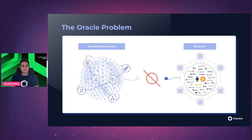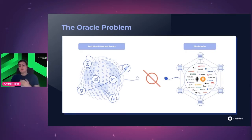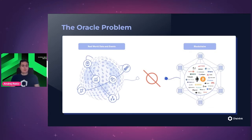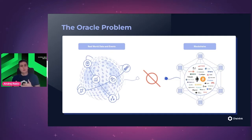That is the smart contract connectivity problem, and it was solved by oracles. By definition, an oracle is any entity — software, hardware, or a combination — that can provide off-chain data or off-chain computation to a smart contract. But the problem with oracles is straightforward: if you have decentralized infrastructure on-chain but your oracle is centralized — say, one single AWS server — then what's the point of Web3? That's the oracle problem.